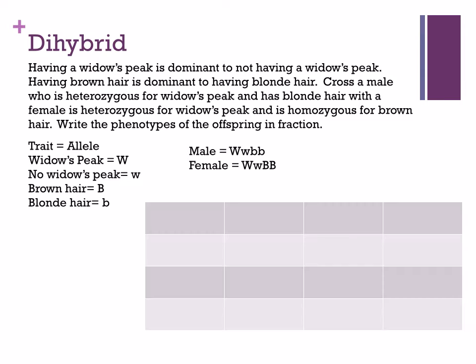Now we're going to figure out what letters go on the top and the side of the dihybrid Punnett square for the male and the female. When looking at the male genotype, I'm going to have a W and a B. I could use the FOIL method, or I could figure it out by drawing a smaller Punnett square. If I draw a smaller Punnett square for the male, the capital W and lowercase w would be on the top, and the two lowercase b's on the side.